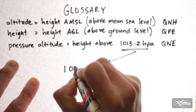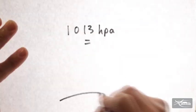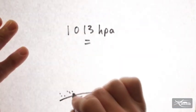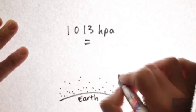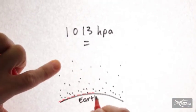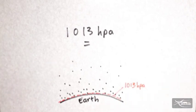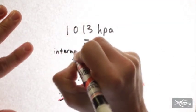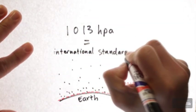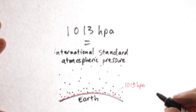What is the 1013 hectopascal pressure reference mean? That comes from the ISA standard pressure at sea level, which is 1013.2 hectopascals, ISA being the international standard atmosphere pressure.